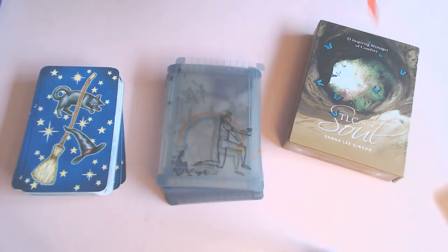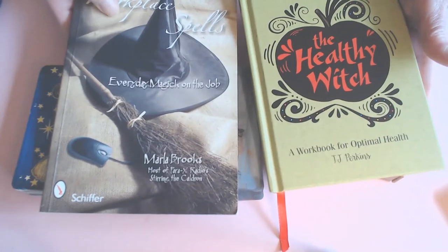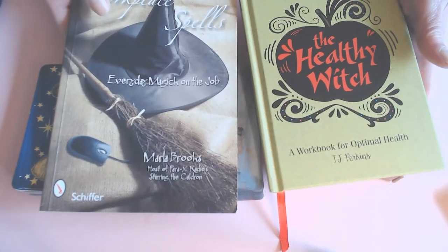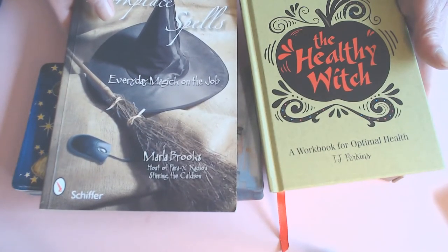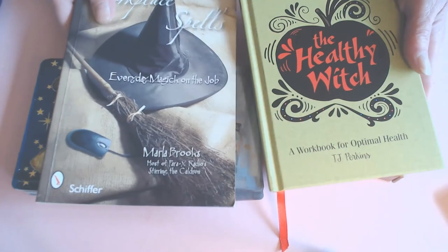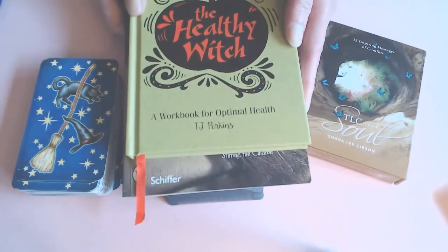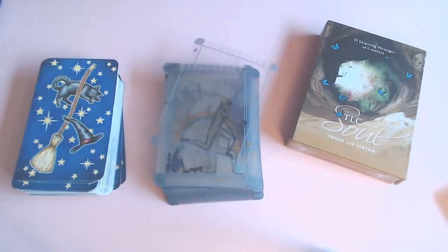If you'd like to get into it yourself, these are the two books. This one is The Workplace and Spells by Marla Brooks. We did the series on her Oracle cards, The Witches Oracle Cards. And this one is by TJ Perkins, The Healthy Witch. It's great fun.